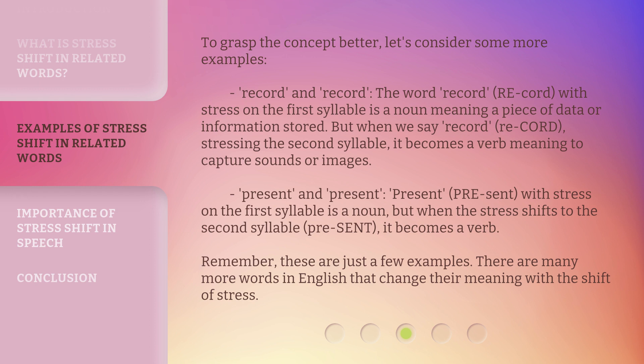'Present' and 'present.' PREsent, with stress on the first syllable, is a noun. But when the stress shifts to the second syllable — preSENT — it becomes a verb. Remember, these are just a few examples. There are many more words in English that change their meaning with the shift of stress.